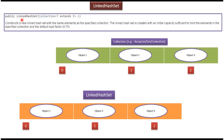This is the fourth LinkedHashSet constructor, which accepts a collection. The collection can be an ArrayList, Set, LinkedList, etc. If we pass a collection containing three objects to this constructor, it will create a new LinkedHashSet containing all the elements from that collection.